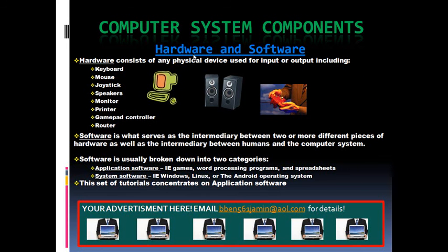A computer system is comprised of all the physical and non-physical components which make a computer useful. They all work together to do one main thing: to provide useful and meaningful information to the user. This holds true with word processing programs as well as the exciting world of video games. We have covered the hardware aspect and learned that it consists of the physical input and output devices which serve to manipulate data. It is also true of the processing aspect that hardware, namely the CPU, handles the processing operations.